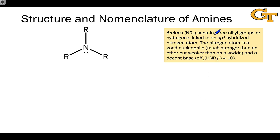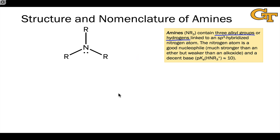Amines, which we might abbreviate as NR3, contain three alkyl groups or hydrogens linked to an sp3 hybridized nitrogen atom. These have to be alkyl groups because if unsaturated — for example, a double or triple bond — that functional group has a different name. The nitrogen atom is an excellent nucleophile and a pretty decent base. The pKa of the conjugate acid of an amine, an ammonium ion, is about 10.